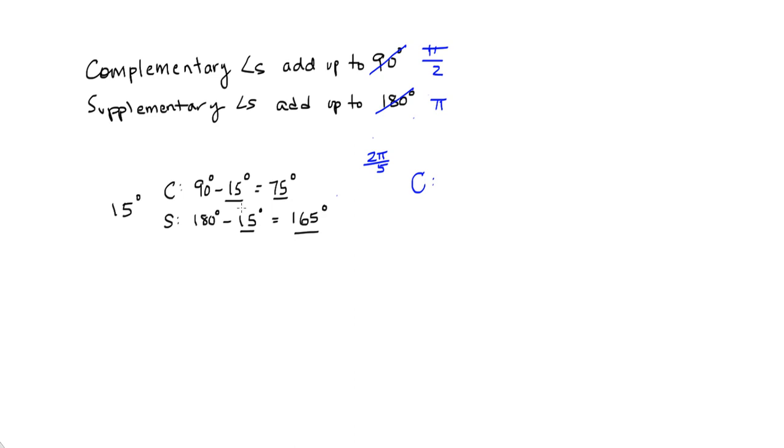Well, what did I do to find the complementary angle in degrees? I subtracted my angle from 90 to find my complementary angle. So, if I'm talking about radians, what do I do? I'm going to subtract my angle, not from 90 degrees, but from what 90 degrees is in radians, which is pi over 2.